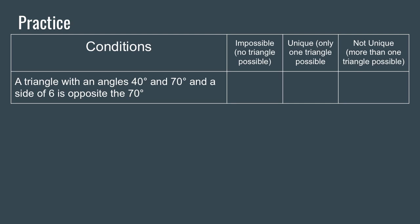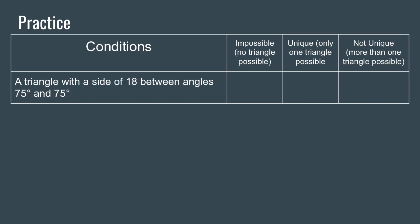A triangle with angles 40 and 70 degrees and a side of 6 that is specified as opposite one angle — that results in a unique triangle. We know that when the side is referenced as being opposite a specific angle, that is an AAS situation resulting in a unique triangle. Similarly, a triangle with a side of 80 between angles of 75 and 75 degrees is also unique — ASA locks the triangle into place.